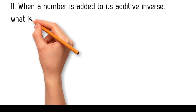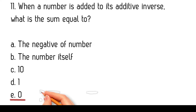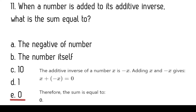When a number is added to its additive inverse, what is the sum equal to? The negative of the number, the number itself, ten, one, zero. The additive inverse of a number X is negative X. Adding X and negative X gives zero. Therefore, the sum is equal to zero.